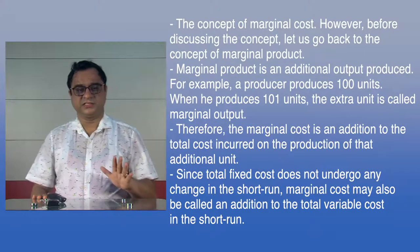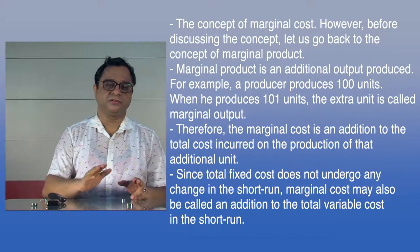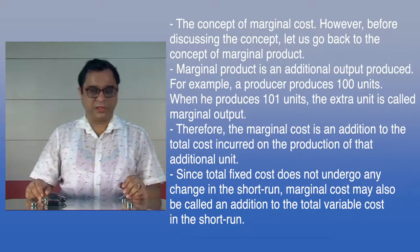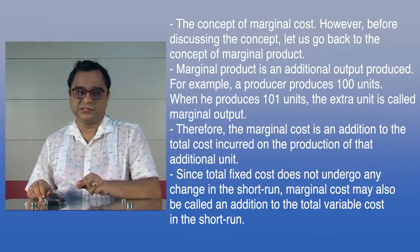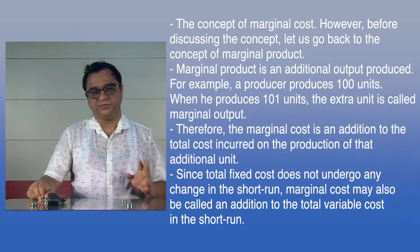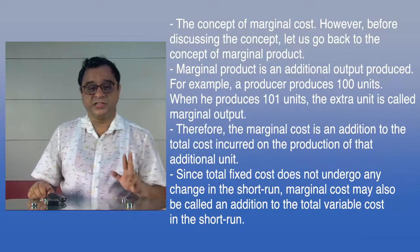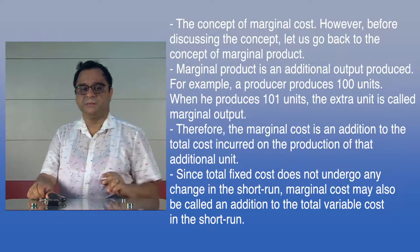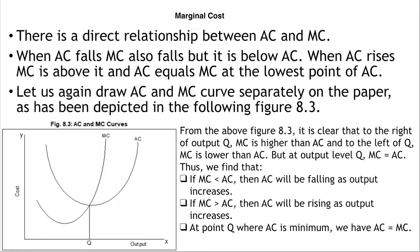Now let us discuss the concept of marginal cost. Marginal product is the additional output produced — for example, if a producer produces 100 units, and then produces 101 units, the extra unit is called marginal output. Therefore, marginal cost is the addition to the total cost incurred on the production of that additional or marginal unit. Since total fixed cost does not change in the short run, marginal cost may also be called an addition to total variable cost in the short run.